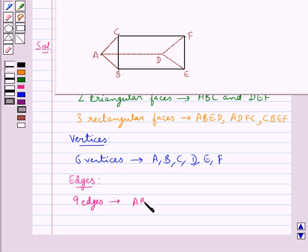which are AB, BC, CA, DE, EF, FD, AD, BE, and CF.